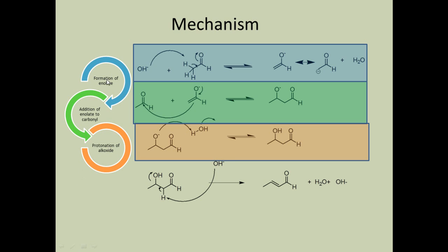The mechanism begins with the first step: base-catalyzed formation of the enolate, where the base abstracts the alpha hydrogen ion, leading to a double bond and a negative charge on the oxygen, which acts as a nucleophile. The negative charge on oxygen stabilizes this enolate. In the second step, the enolate attacks the carbonyl carbon — the electrophilic carbon attached to oxygen. These are equilibrium reactions, representing the addition of the enolate to the carbonyl.